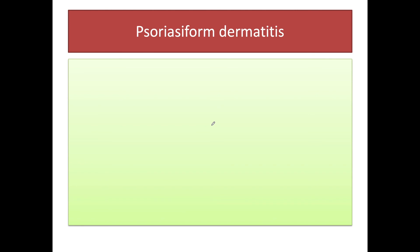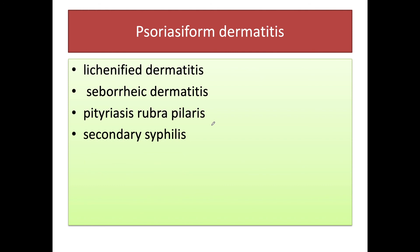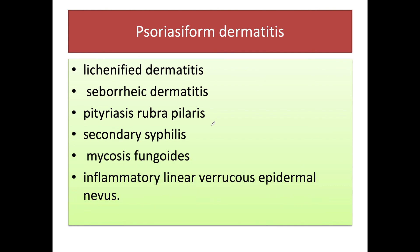There is an entity called psoriasiform dermatitis. It is a histopathological term that refers to a group of disorders which histologically mimic psoriasis. These disorders include: lichenified dermatitis, seborrheic dermatitis, pityriasis rubra pilaris, secondary syphilis, mycosis fungoides, and inflammatory linear verrucous epidermal nevus (ILVEN). These are essentially the differential diagnoses of psoriasis on histopathology.